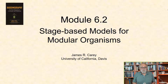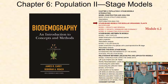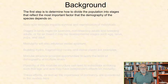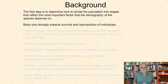In this second module of Chapter 6 on Stage Models, Module 6.2, I will discuss stage-based models for modular organisms with a specific focus on plants. The first step when building a stage-structured model is to determine how to divide the population into stages that reflect the most important factors that the demography of the species depends on. Body size strongly impacts survival and reproduction of individuals, and discrete size classes are often used in stage-based models.